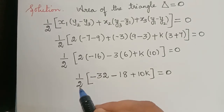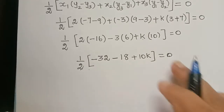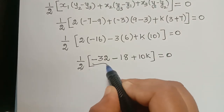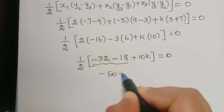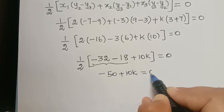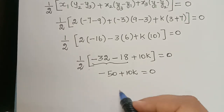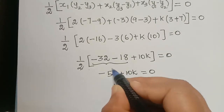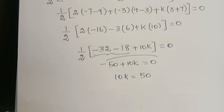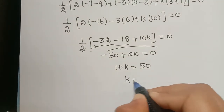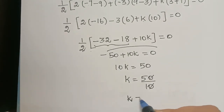The 2 in the denominator cross-multiplies with the zero on the right side, giving zero. So we have: -32 minus 18, which is -50, plus 10k equals zero. Therefore 10k equals 50, and the value of k equals 50 divided by 10, which gives k equal to 5.